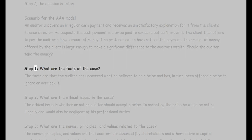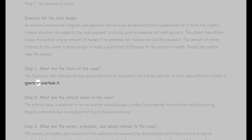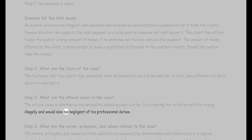Step one — what are the facts of the case? The facts are that the auditor has uncovered what he believes to be a bribe and has, in turn, been offered a bribe to ignore or overlook it. Step two — what are the ethical issues in the case? The ethical issue is whether or not an auditor should accept a bribe. In accepting the bribe, he would be acting illegally and would also be negligent of his professional duties.